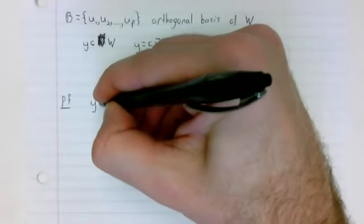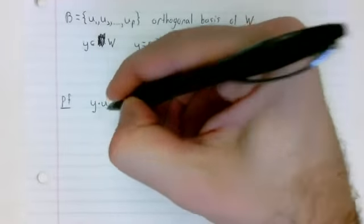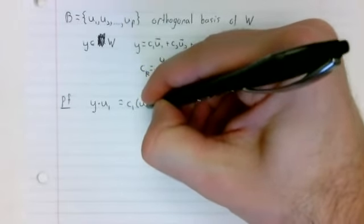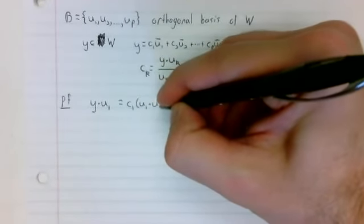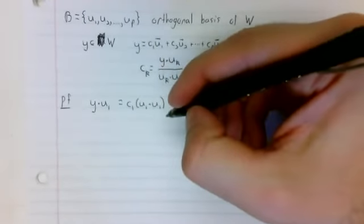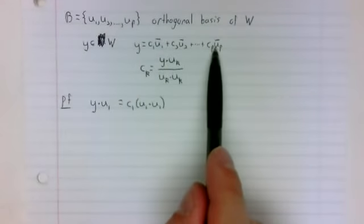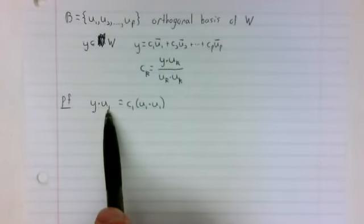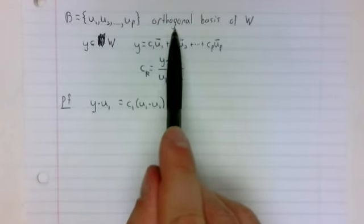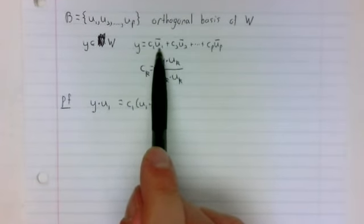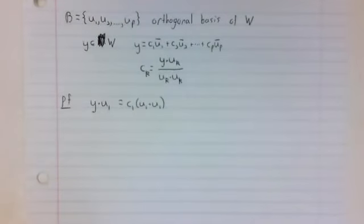Proof: y dot u sub 1 equals c sub 1 times u sub 1 dot u sub 1. We saw that in the proof of the previous theorem. You take this, you dot it with u sub 1. And because of orthogonality, all of the dot products are going to be 0 except for this one.